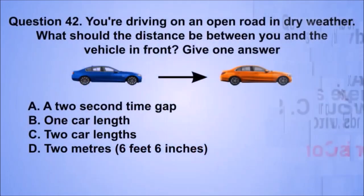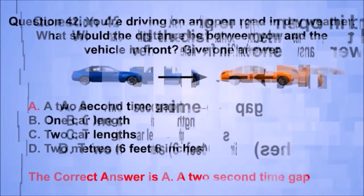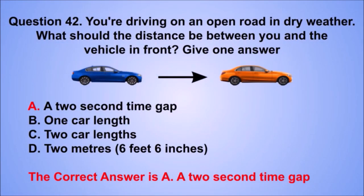Question 42. You're driving on an open road in dry weather. What should the distance be between you and the vehicle in front? The correct answer is A: A two-second time gap.